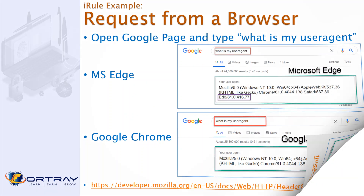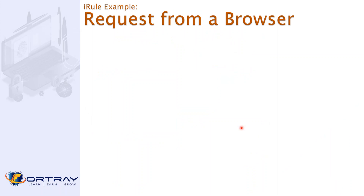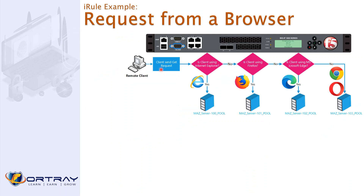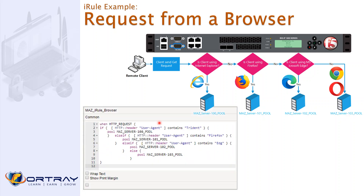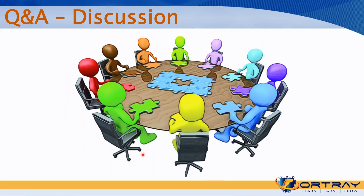In our iRule example: when a GET request comes in, if the user agent indicates Internet Explorer, serve it from one pool; if Firefox, from another; if Microsoft Edge, from a third pool; otherwise use a default pool. This script has already been created and will be attached during the lab. Any questions about iRules? No — great, we'll do the lab now.